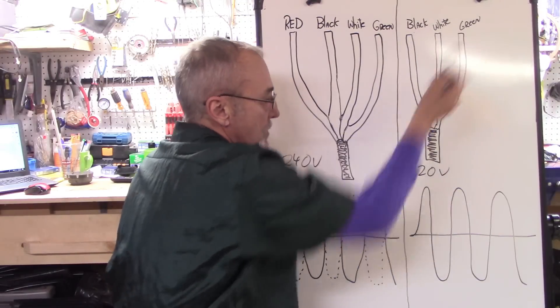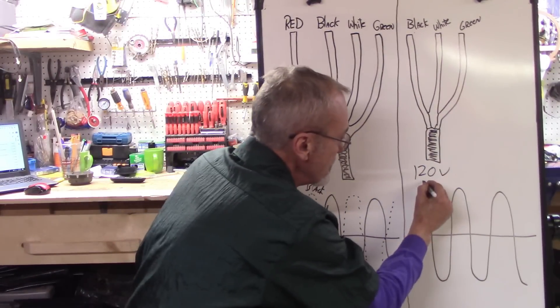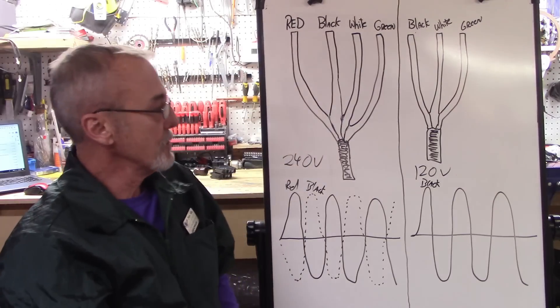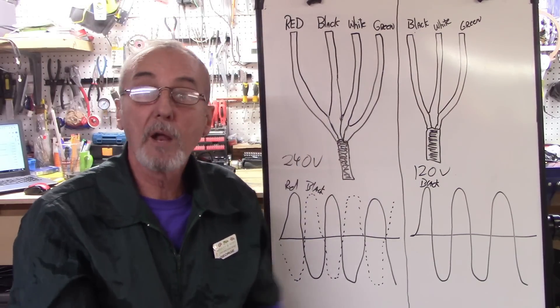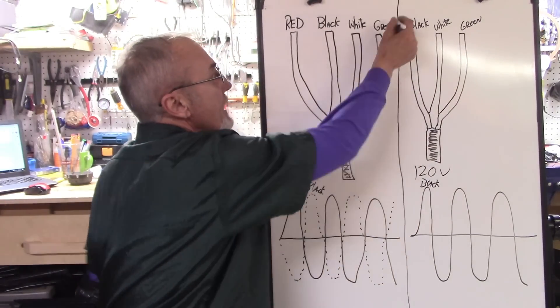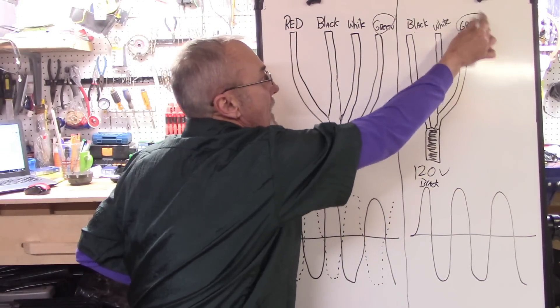In this one, you have a black, white, and a green. This one is the black. So if you use the black and the white, you'll have 120 volts. We all know the green is ground. In both cases, green is ground.